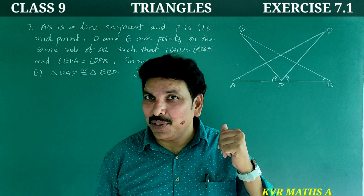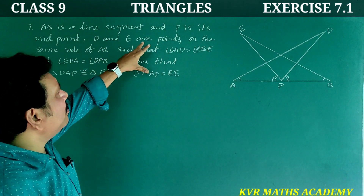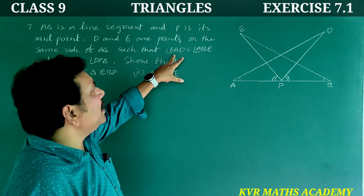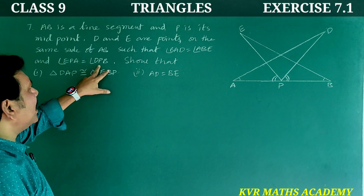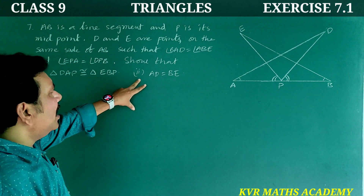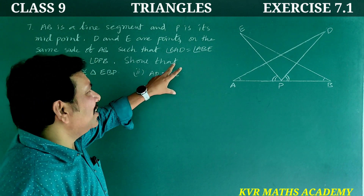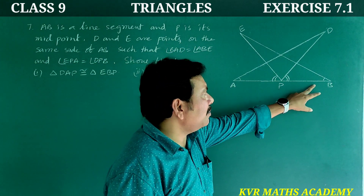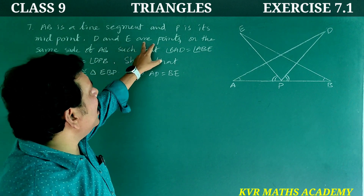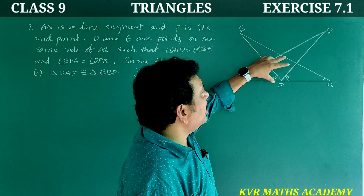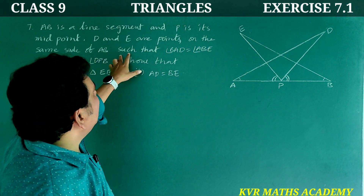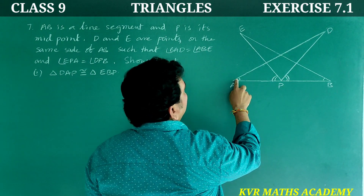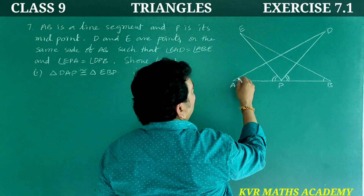Seventh question: AB is a line segment and P is its midpoint. D and E are points on the same side of AB such that angle BAD is equal to angle ABE, and these two angles are equal.